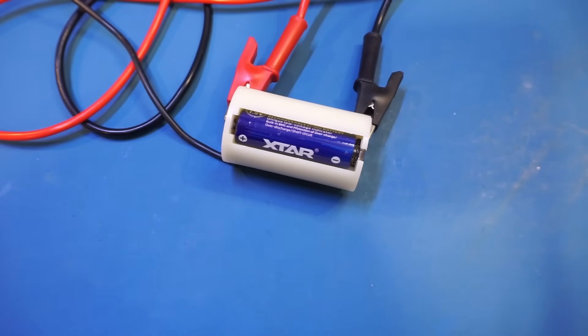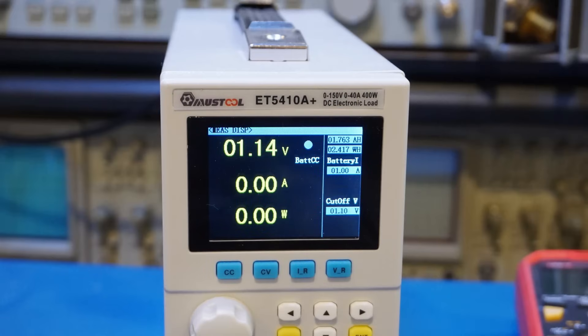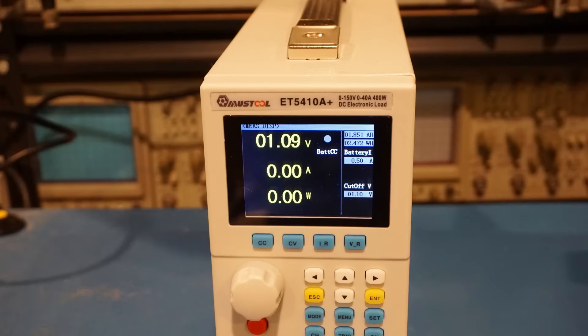And it seems that the maximum capacity I got was below 2 amp hours, instead of the rated 2.5 amp hours. When discharged at 1 amp, the total capacity measured was roughly at 1.76 amp hours. And when discharged at 500 milliamps, the total capacity was slightly better, at 1.85 amp hours.